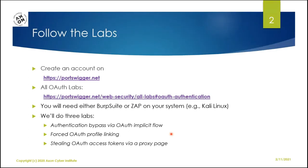In order to perform the labs, you will need the Burp Suite tool or ZAP Proxy tool. I'm going to use ZAP Proxy for today's demonstration, or if you have Kali Linux, it comes already with both of these tools. We're going to do three labs. They have maybe ten labs on OAuth authentication but we will not have time to do them all. The first is authentication bypass via OAuth implicit flow, the second is OAuth profile linking, and the third is stealing OAuth access tokens via a proxy page.